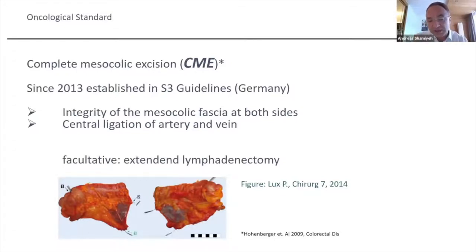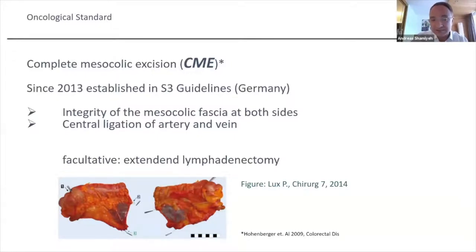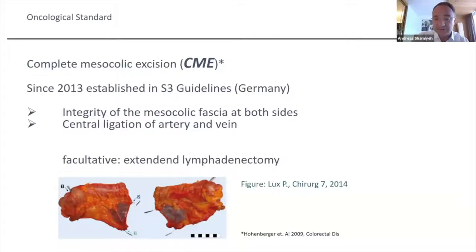What we should take care of, like in the rectum, is the complete integrity of the mesocolic fascia on both sides, and of course a really high tie, meaning a very central ligation of the artery and vein. This makes it more difficult than years ago, and sometimes requires an extended lymphadenectomy.